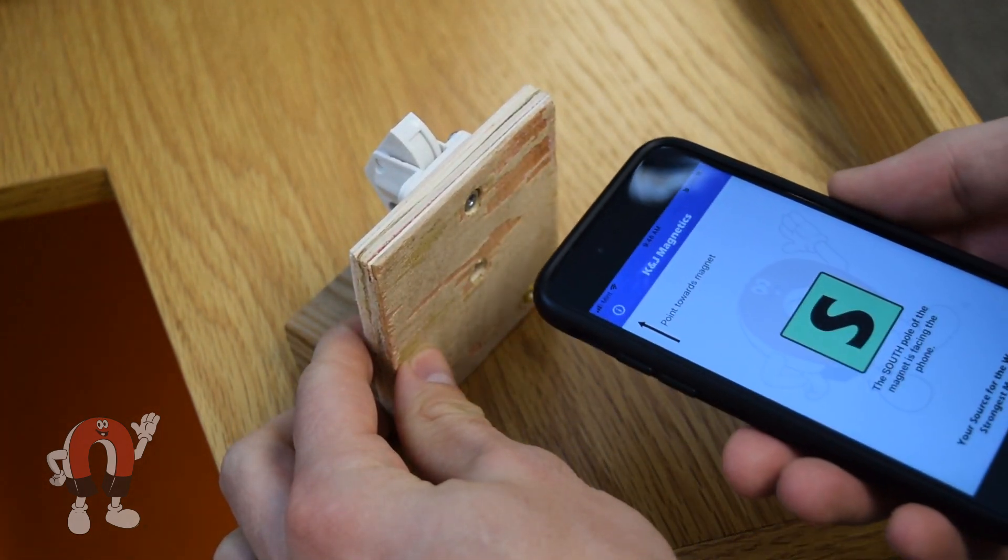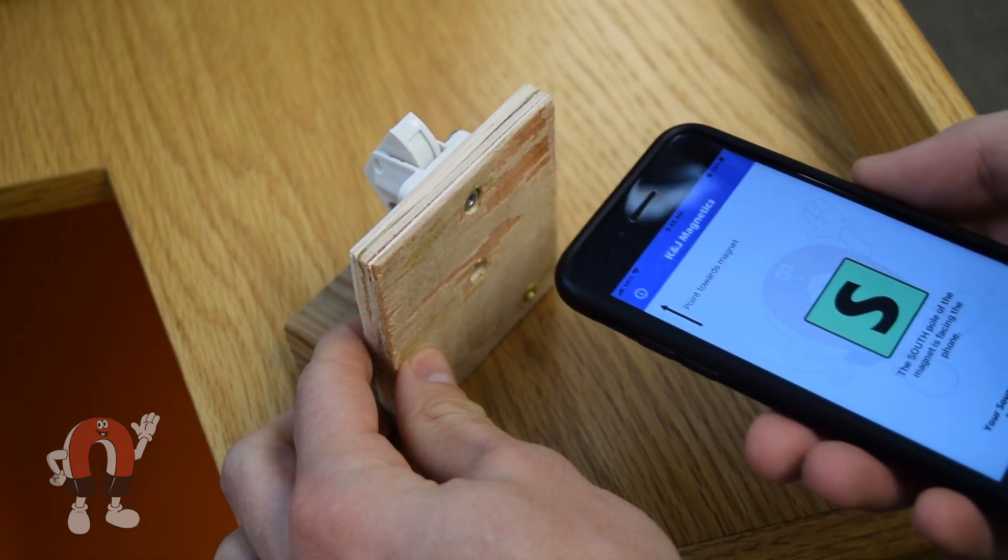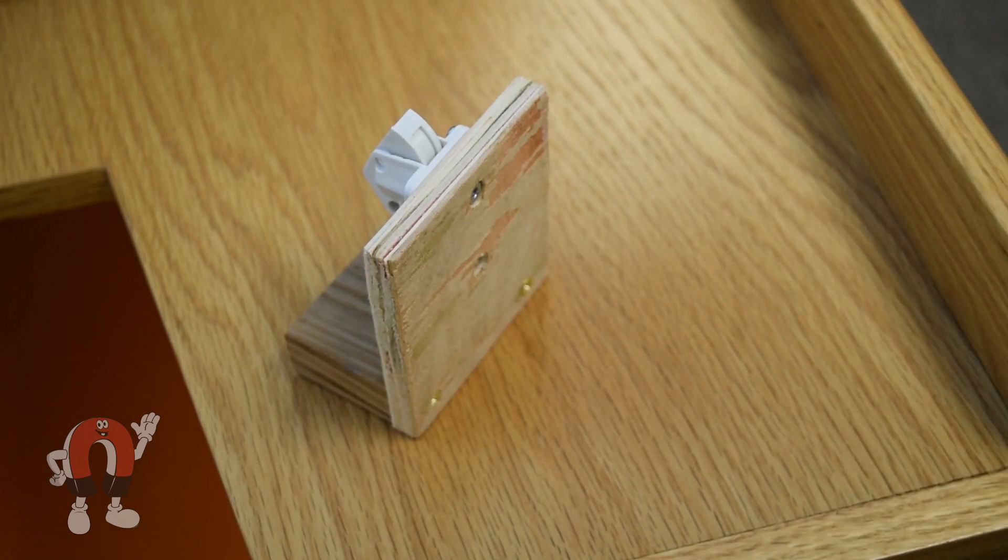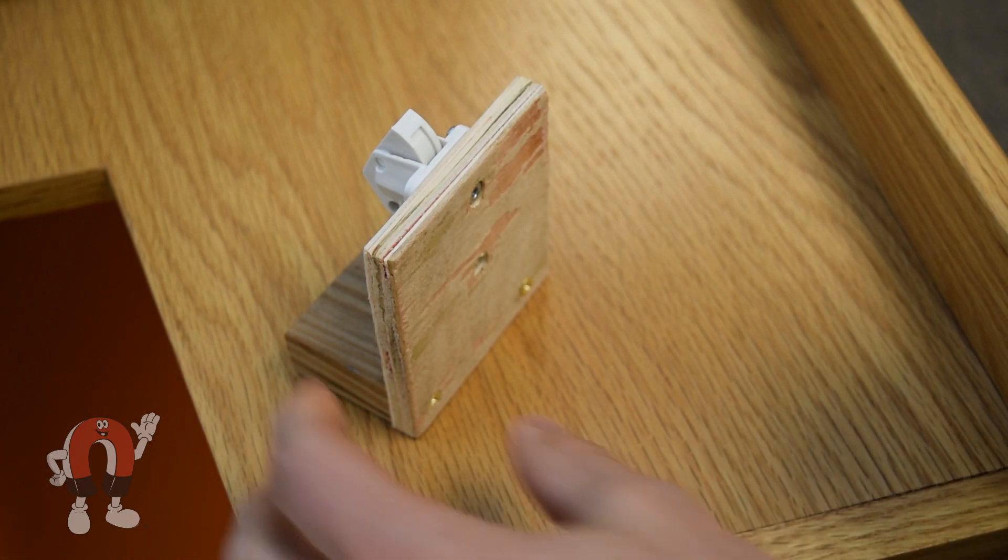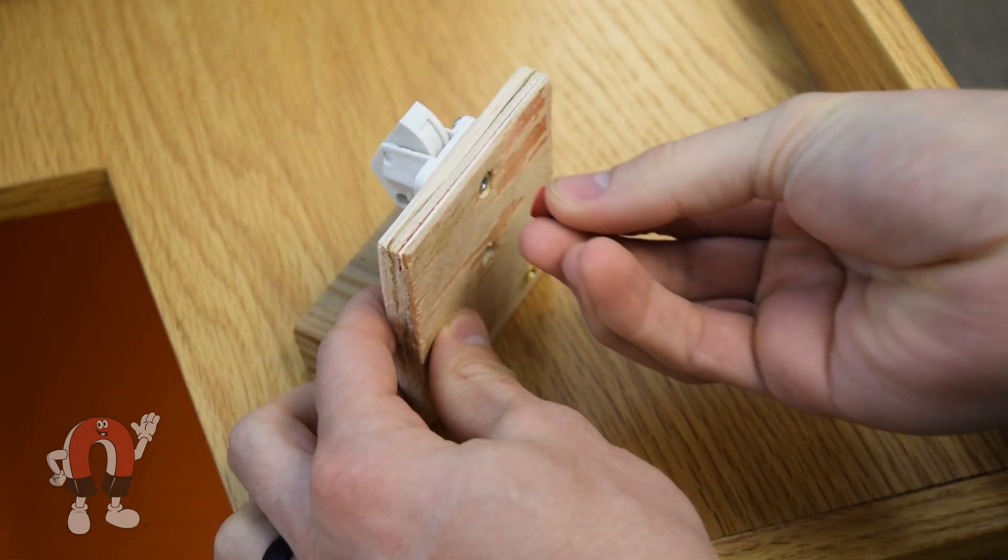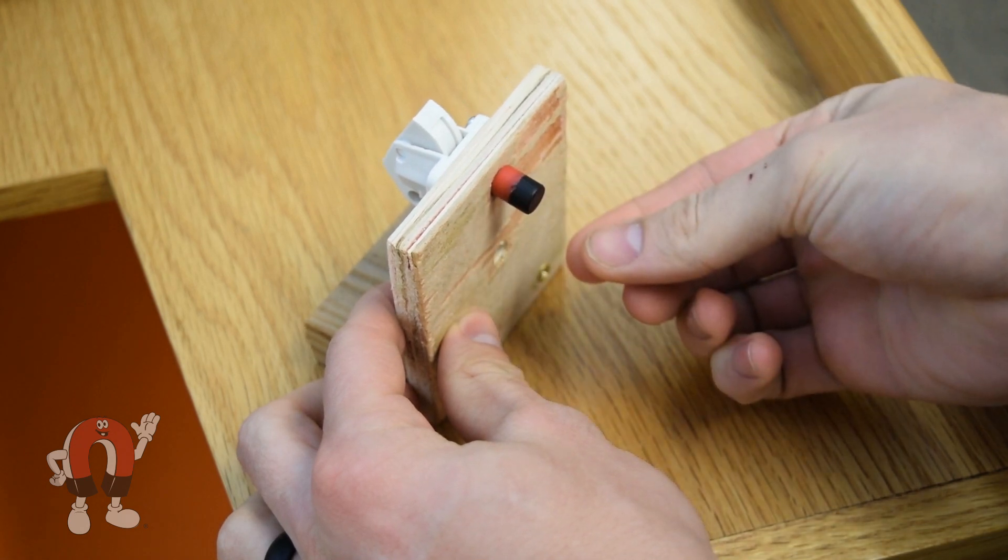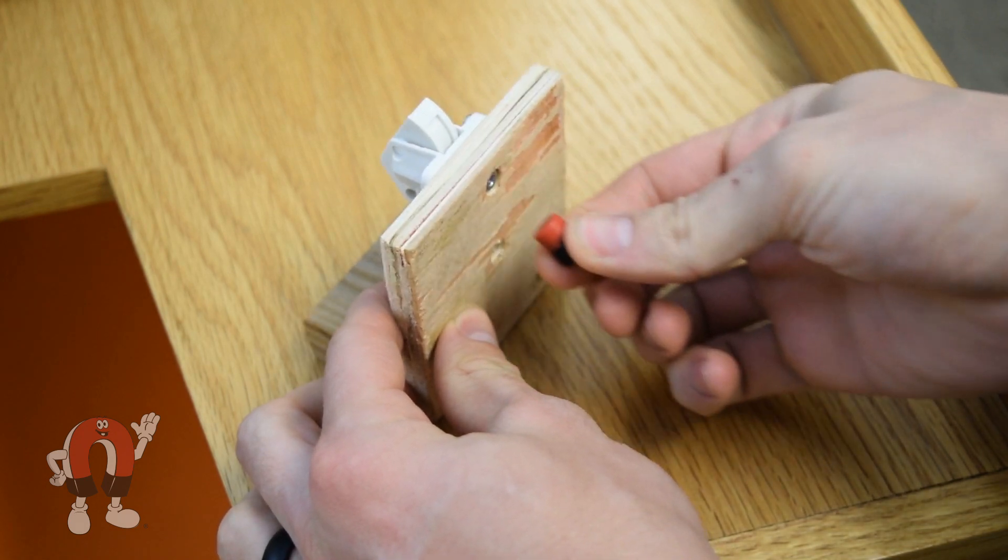The magnet in the latch has the south pole facing outwards. The magnetic key also has the south pole facing outwards so that when you bring the key close to the latch it temporarily magnetizes the steel cylinder in the same direction, causing the steel magnet and the latch magnet to repel each other.